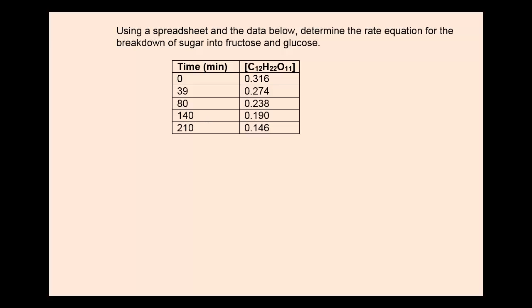Using a spreadsheet and the data below, determine the rate equation for the breakdown of sugar into fructose and glucose. In this sort of problem, we need to plot the data three ways: zero order, first order, and second order.